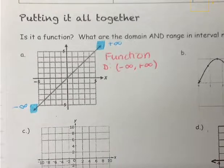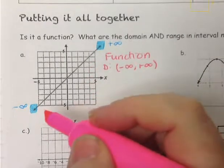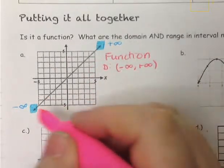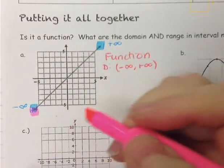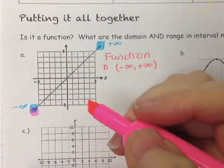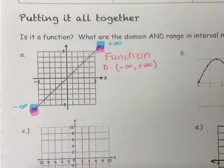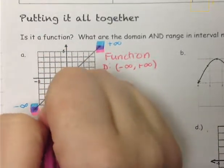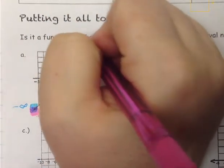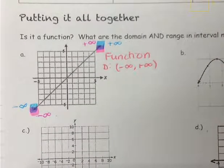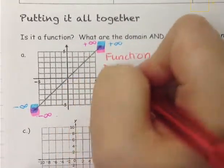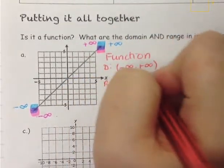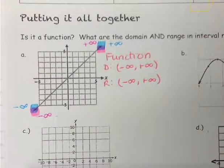We'll do the same thing with the range, but using pink. I want the lowest value to the highest value. The lowest point on the graph is the arrow pointing down, which takes us to negative infinity, and the arrow pointing up takes us to positive infinity. Therefore, our range is open bracket, negative infinity, comma, positive infinity, open bracket. It is a function, and our domain and range are both negative infinity to positive infinity.